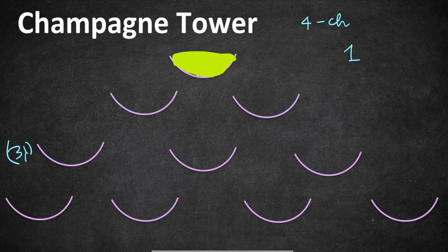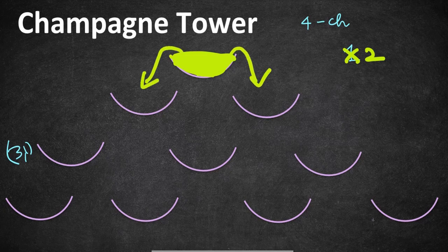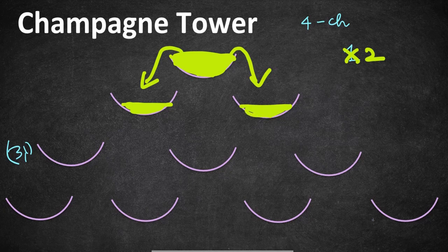Now it's time to pour two glasses of champagne. While pouring the second glass it will start spilling — half of it to the glass on the left and half to the glass on the right. After finishing the second glass, 0.5 fills the left glass and 0.5 fills the right glass. So glass number one is completely consumed, and the second glass is equally divided between its two successors.